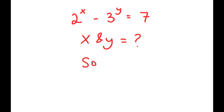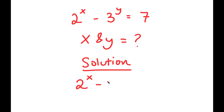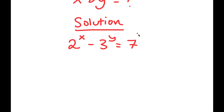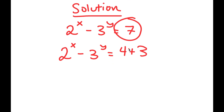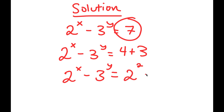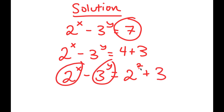For my solution, if I have something in the form 2 to the power of x minus 3 to the power of y is equal to 7, I'm going to rewrite 7 as 4 plus 3. So now I have 2 to the power of x minus 3 to the power of y is equal to 4 plus 3. The reason I did this was because 4 is the same thing as 2 squared. So now I get 2 squared plus 3, and I have something in the form 2 to the power of a number minus 3 to the power of a number, equal to 2 to the power of a number and 3 to the power of 1.